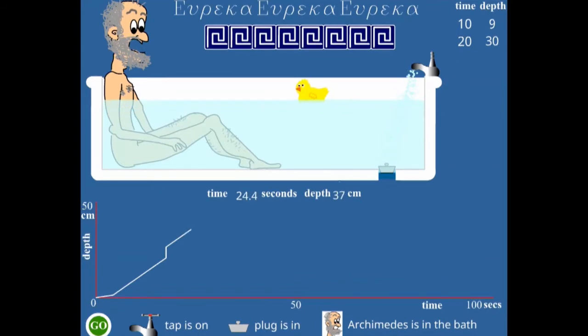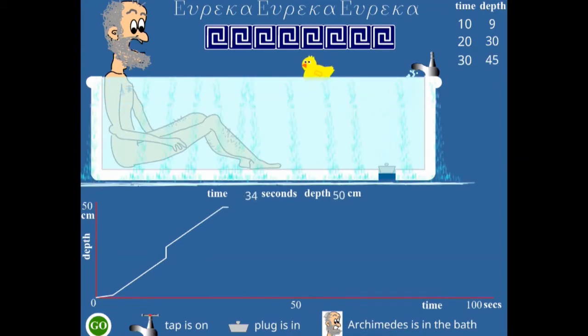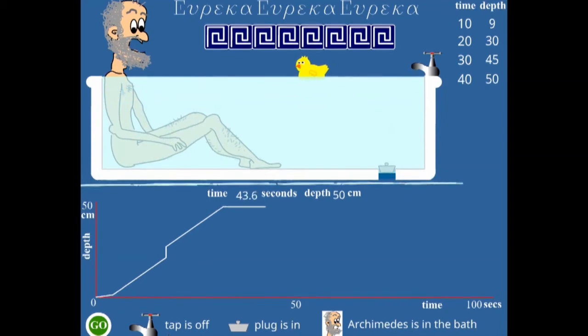As you can see from the graph, when he gets in, there's a sharp change in the depth because of the water he displaces. It looks like a vertical line. It's not quite a vertical line. It slopes slightly to the right. It can't be vertical. There can't be two depths at the same time. The bath was just overflowing there, I saw.